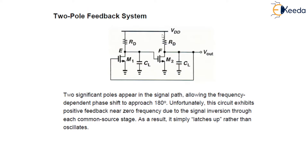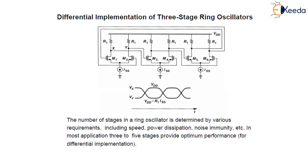We have done this two pole feedback system with additional signal inversion. We will study some more topologies of ring oscillators — that is three stage and four stage. In the figure, it is shown the differential implementation of a three stage ring oscillator. We have already studied differential implementation of three stages, and now we see how this ring oscillator is implemented using this differential implementation.